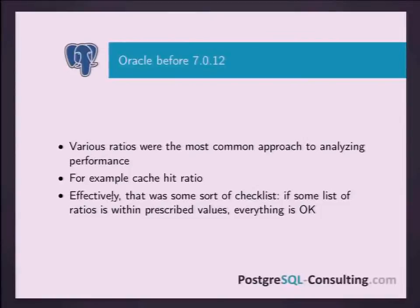In old times in Oracle, before version 7.0.12, the situation was pretty much the same. They had some ratios — several basic ratios, for example, cache hit ratio. If the ratio was within some range of values, everything was okay; if it was outside, that was a bad thing. It was essentially a checklist. The DBA needed to verify if everything was okay and then try to advise the customer. But this is a different approach — even in those times, the customer had a problem with response time, not with the ratio. He doesn't care about ratios.